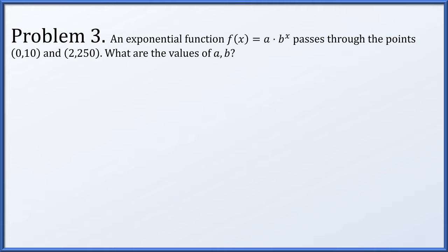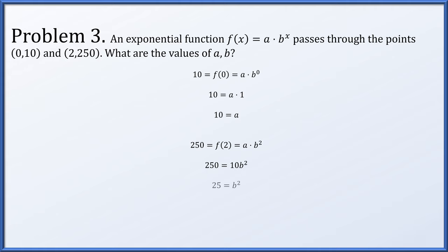Problem 3. An exponential function a times b to the x passes through (0, 10) and (2, 250). Since f(0) = 10, we get a times b to the 0 equals 10, and since b to the 0 is 1, a equals 10. Then f(2) = 250 gives 10 times b squared equals 250, so b squared equals 25, meaning b is plus or minus 5. Since we assume positive bases for exponential functions, b equals positive 5.